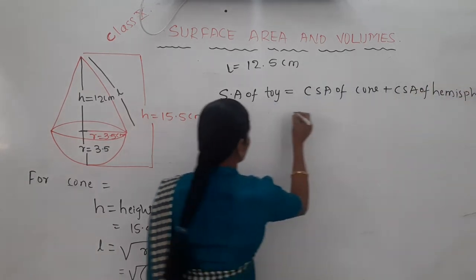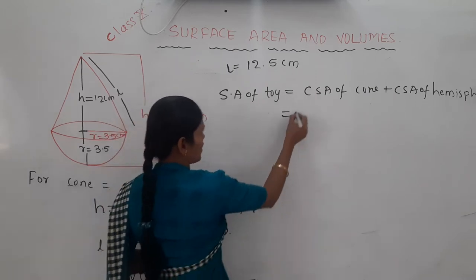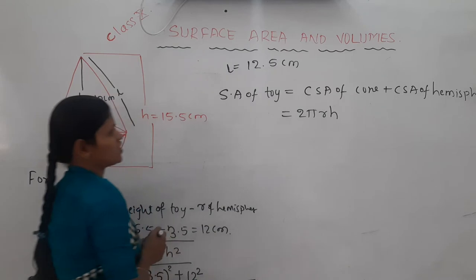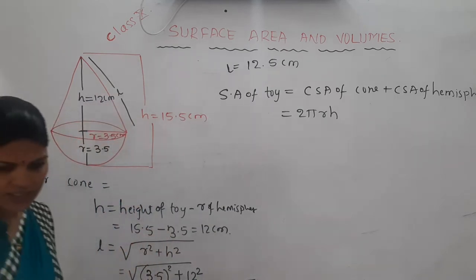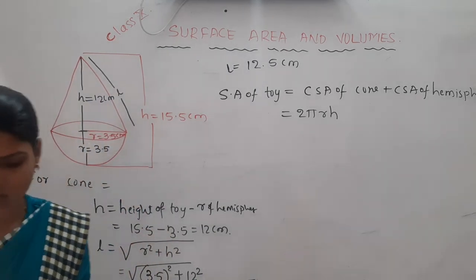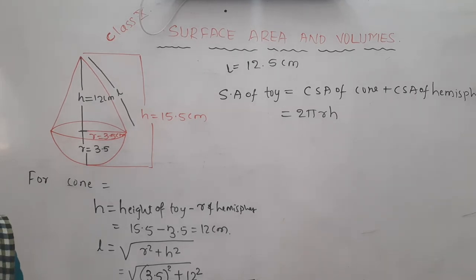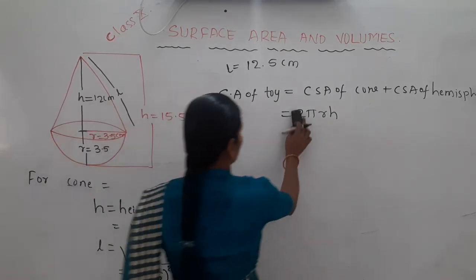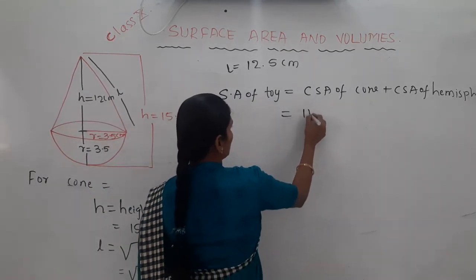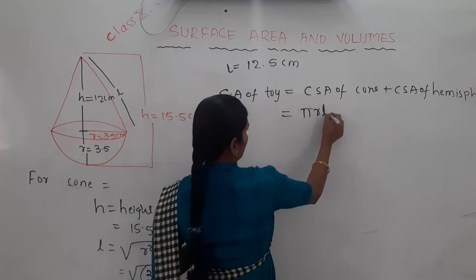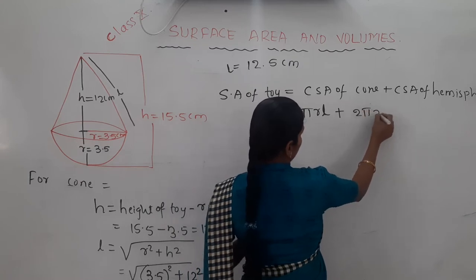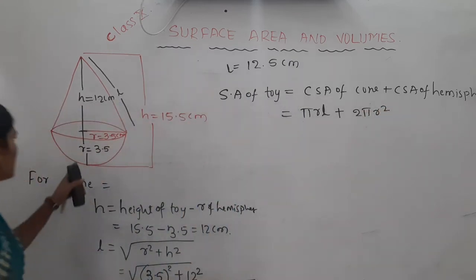The CSA of the cone is π r l, and CSA of the hemisphere is 2π r². The radius of the hemisphere is given as 3.5 centimeters. So: π into r into l, plus 2π r².